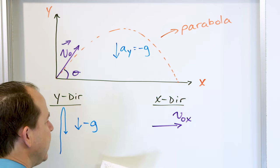The biggest takeaway is that the Y component of motion and the X component of motion are totally unrelated, even though we see them behaving together. The equations are totally separated from one another, and that's how we solve every problem. Follow me to the next lesson — we're going to solve our first problem right now.